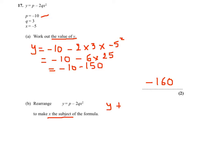So y plus 2qx squared equals p minus 2qx squared plus 2qx squared. This in turn will give me y plus 2qx squared equals p.